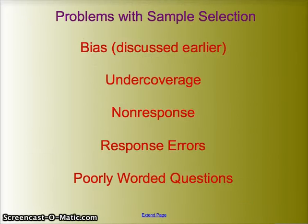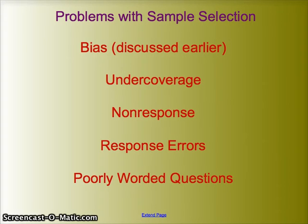So those are problems you should know and be able to identify. Bias is introduced by the four problems listed below. Under-coverage — missing a certain element of the population. Non-response — only getting responses from those who have strong opinions. Response errors — not getting the information you're looking for. Poorly worded questions tend to lead people toward a certain answer that doesn't really reflect what they might think if allowed to think freely.